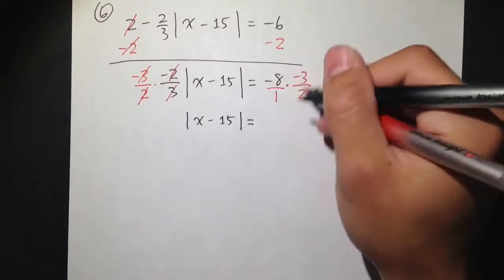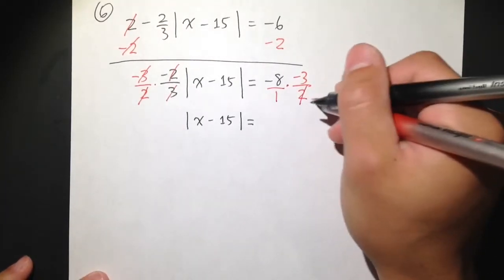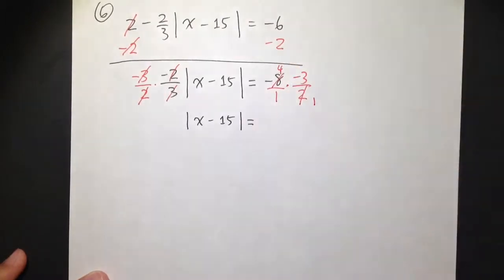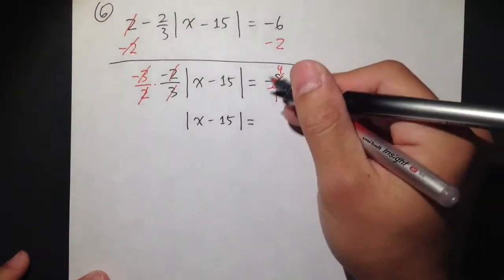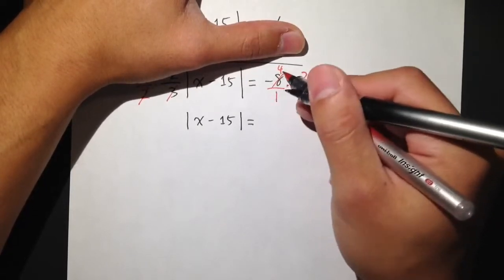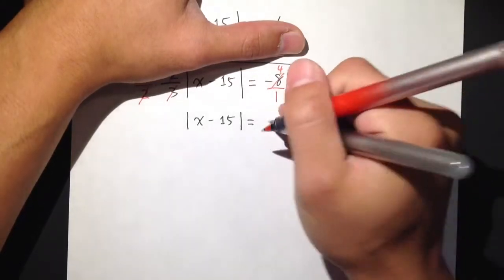Then, to multiply fractions, we can cross-cancel first. I see the 2 goes into 2 once, and the 2 goes into the 8, 4 times. And I will look at this as negative 4 times negative 3, which is the result of a positive 12.